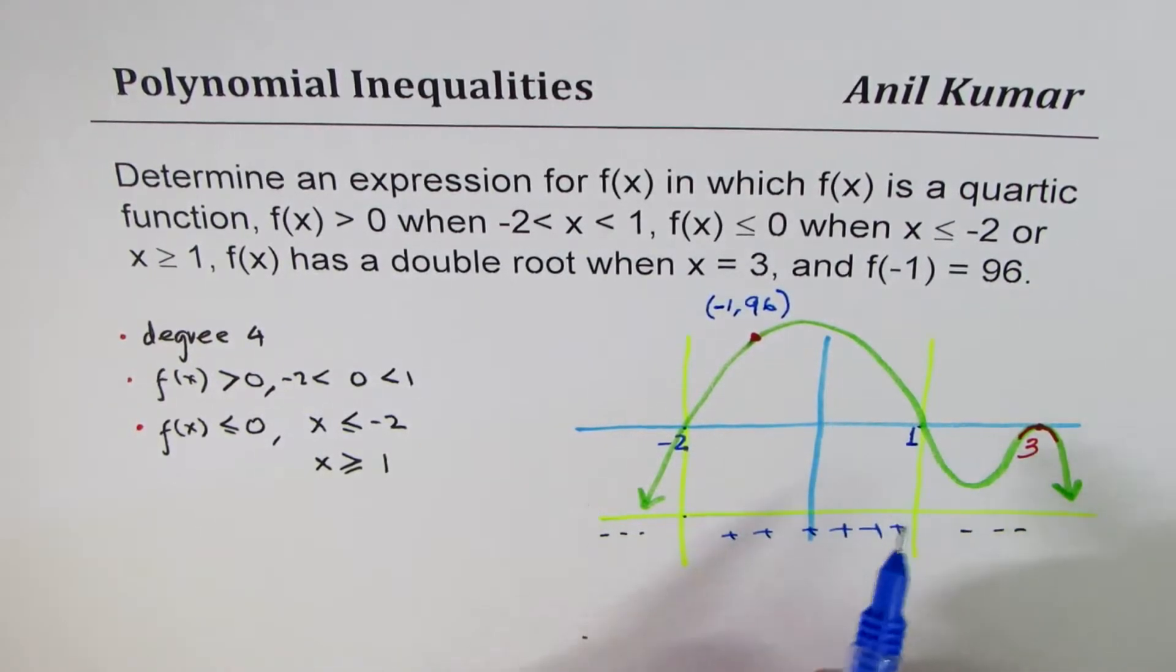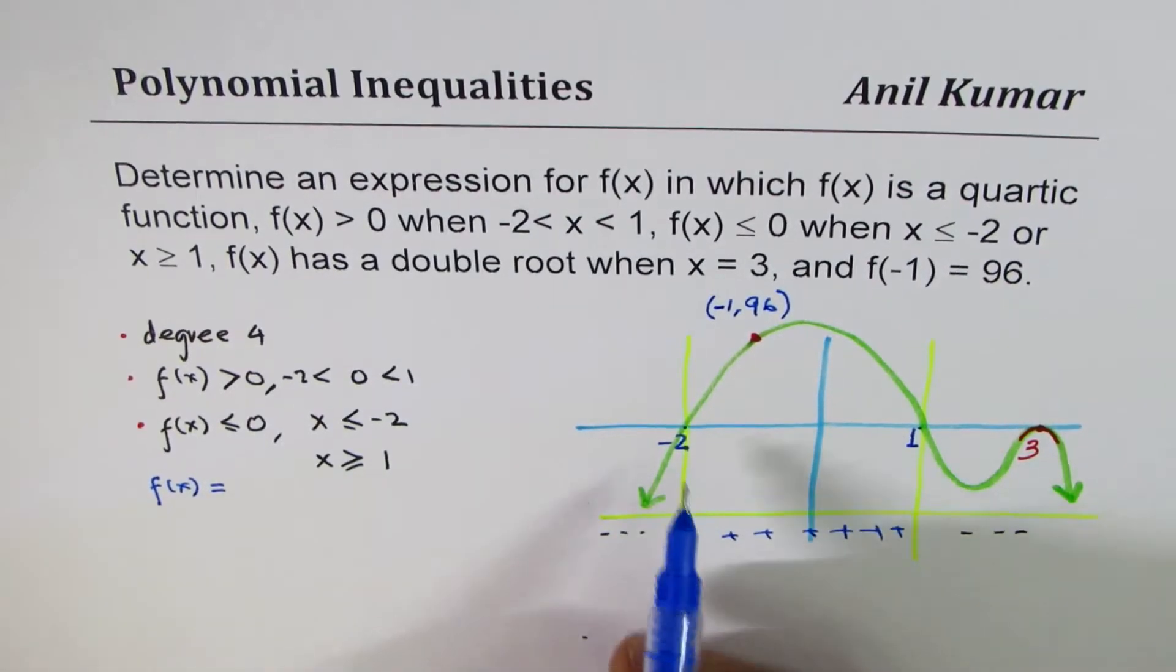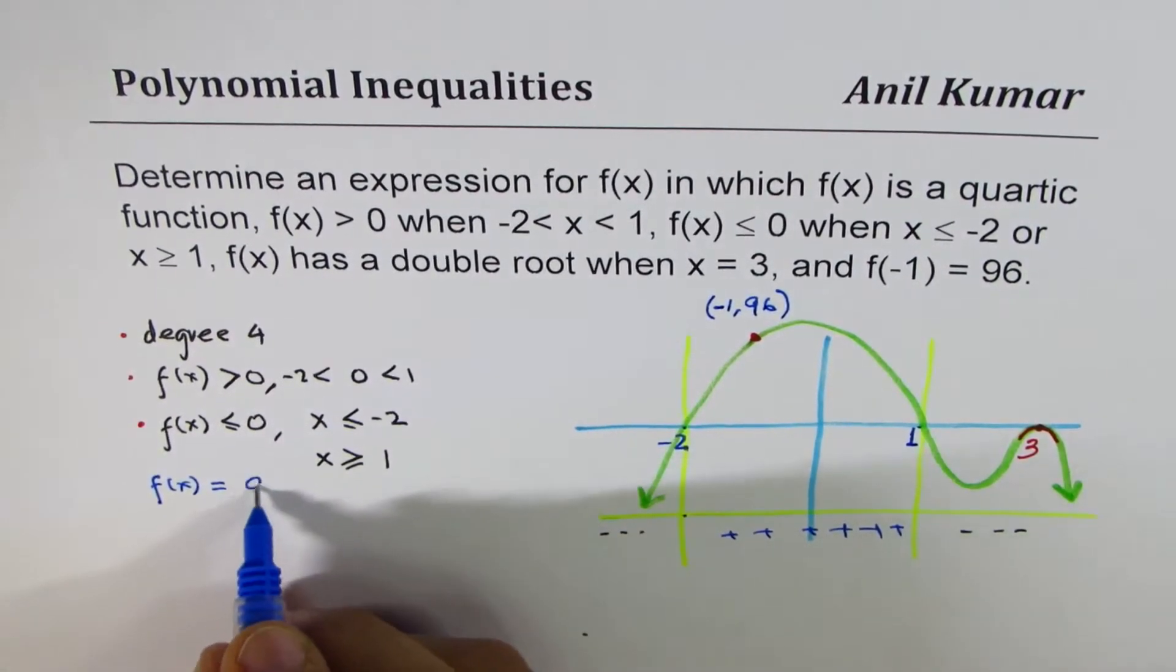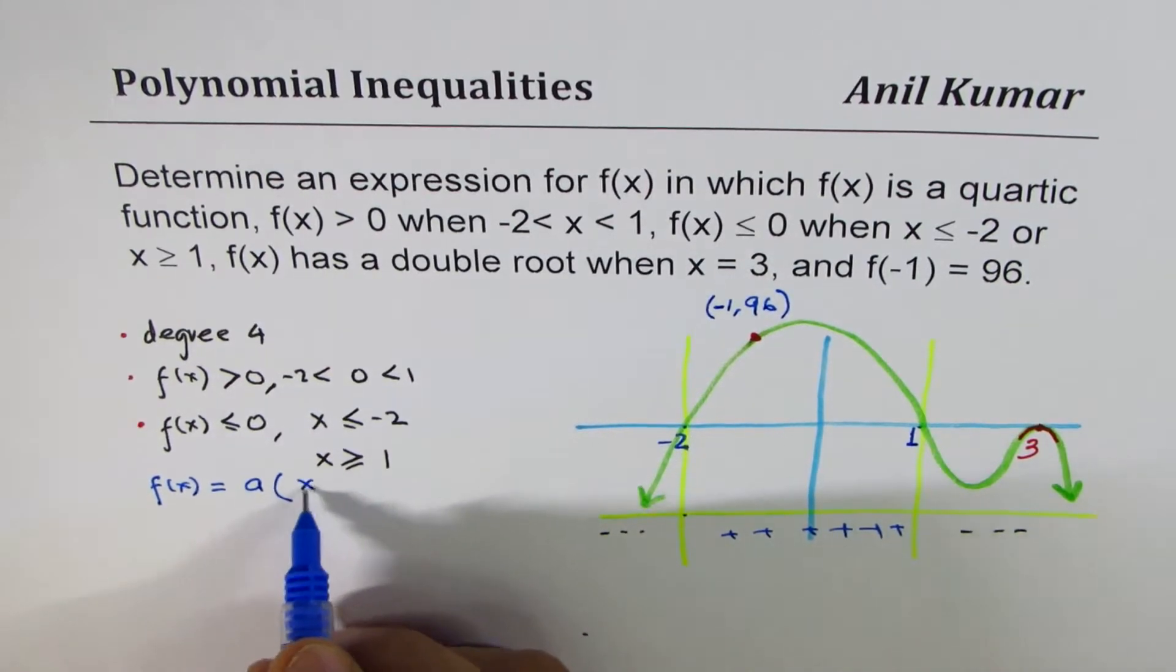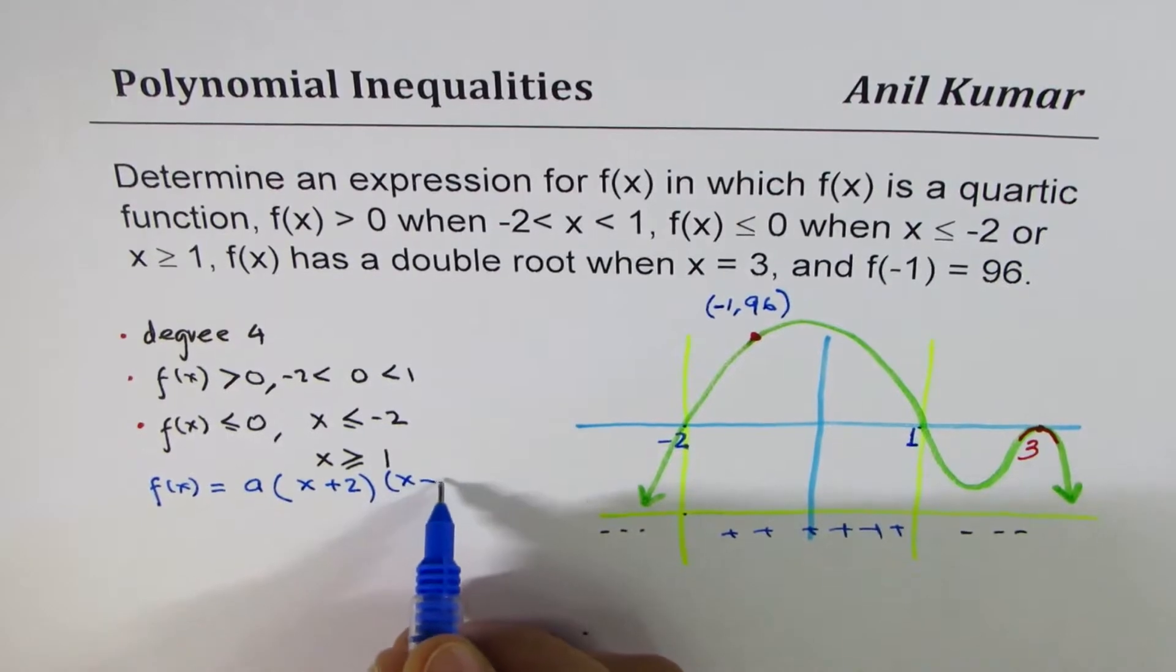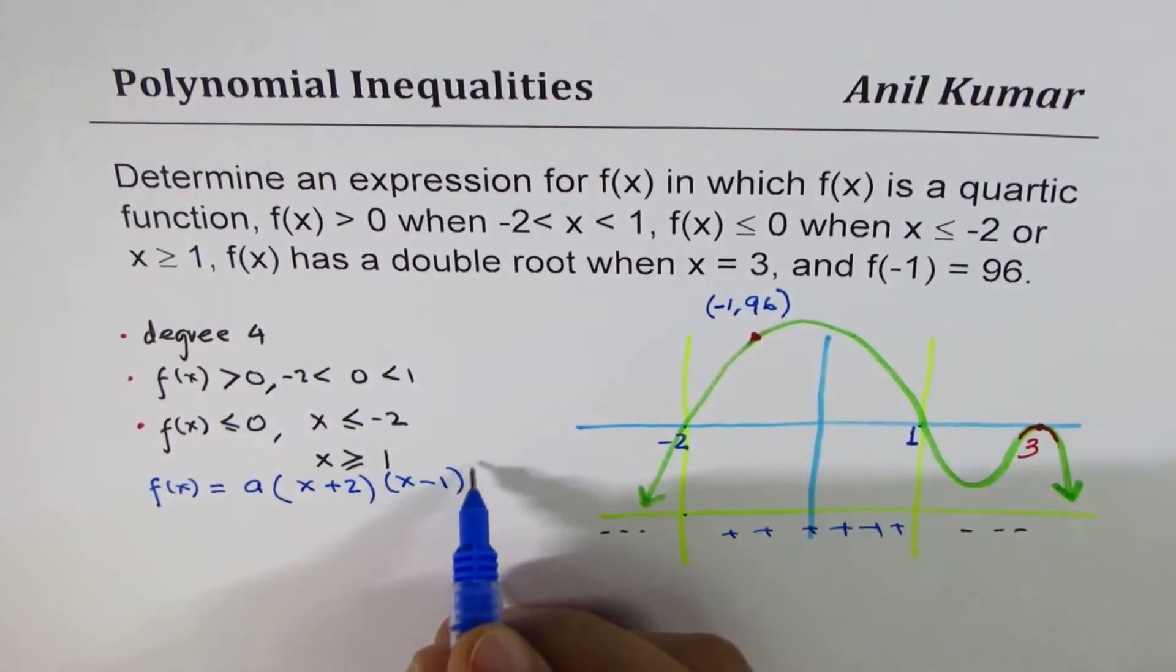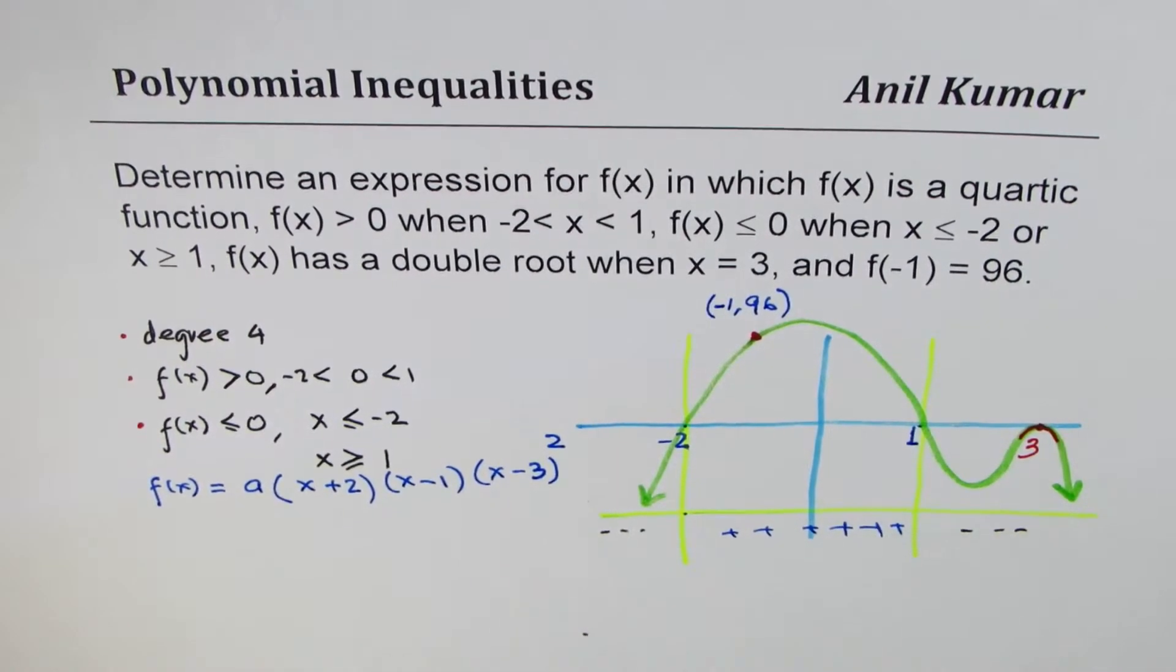Now, based on this, I can write down my function f(x) as equal to, now, I said a times. We will say a times is very important. x plus 2. That is the first root. And then, x minus 1, linear. And then, we have x minus 3, square. That gives you the turning point.